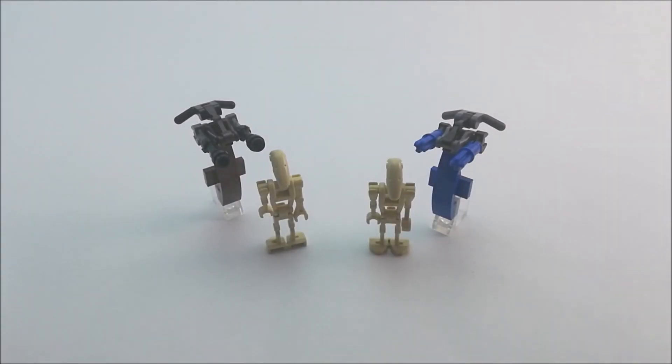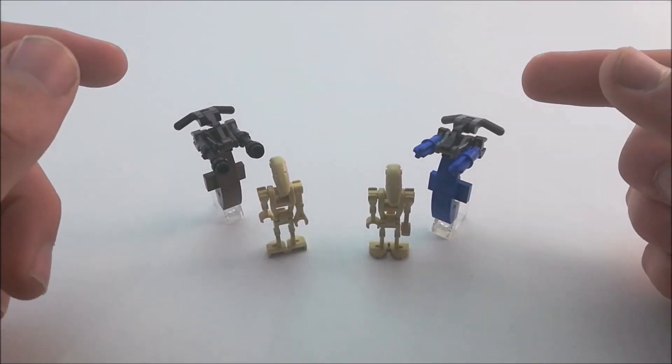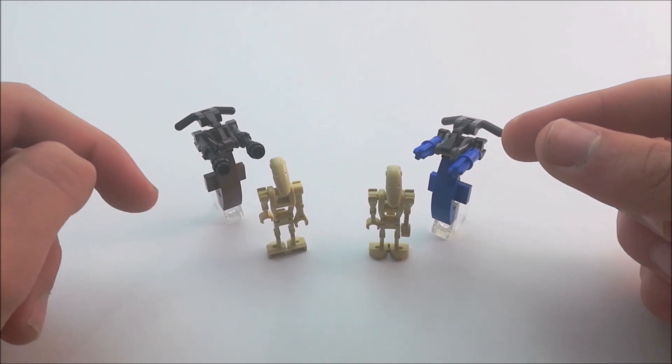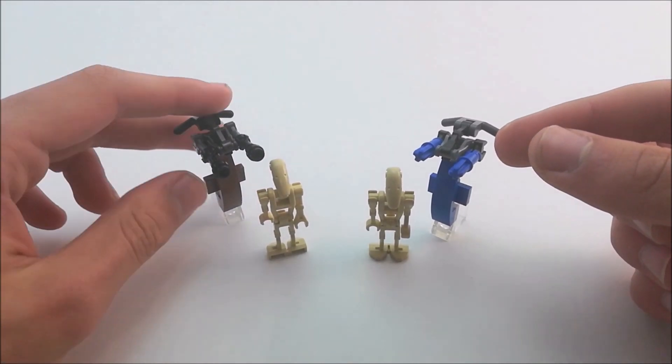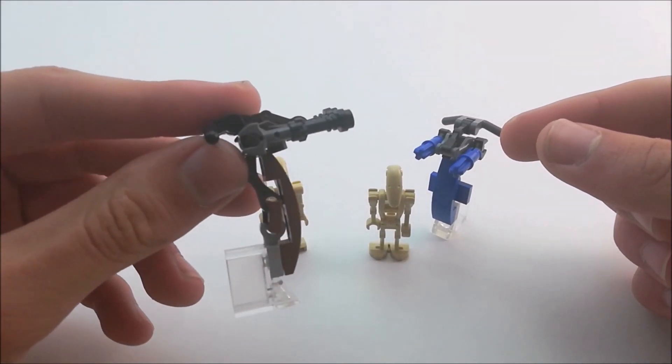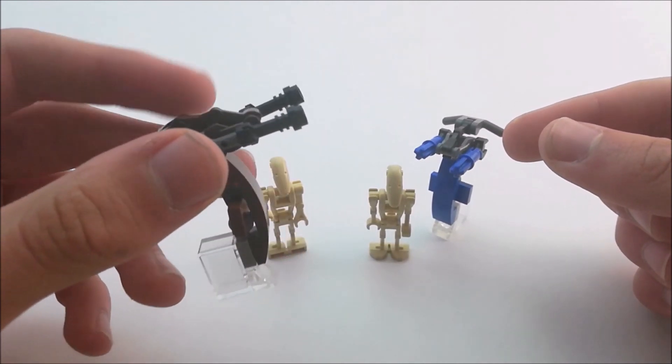Hello everyone and welcome back to Starbricks. Today we're going to be taking a look at this. This is the STAP, a mobile platform for battle droids to travel upon first seen in episode one.